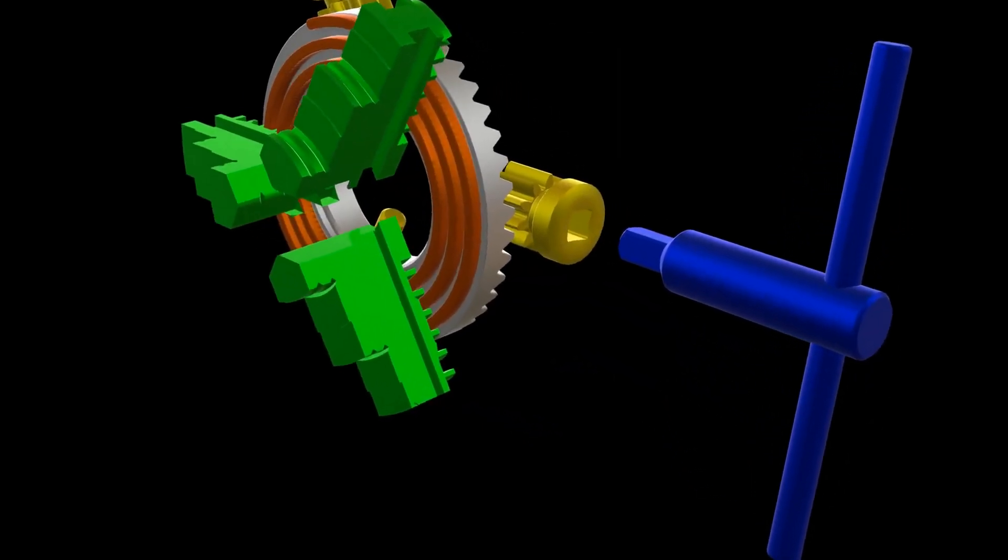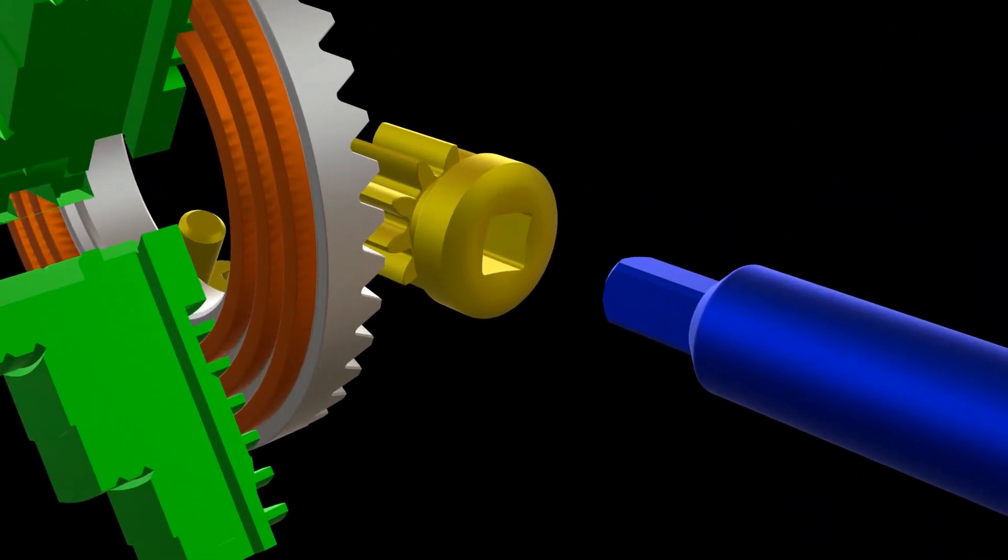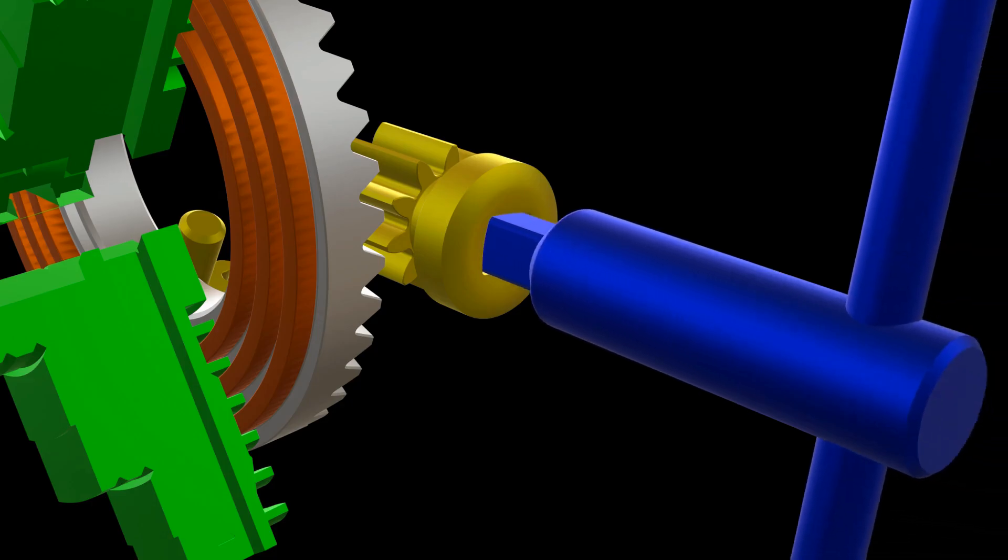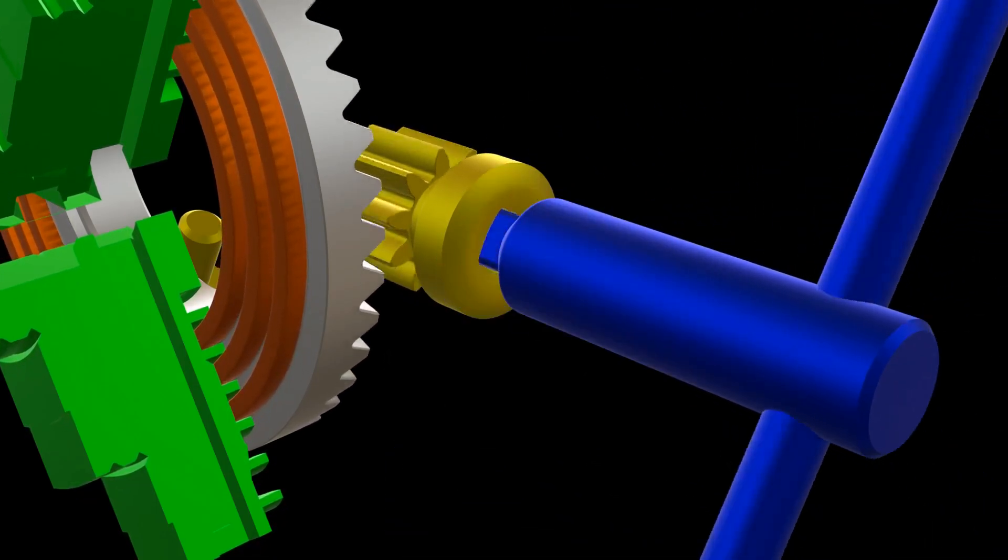The tool has a square end that enters any of the pre-made square grooves. When you rotate the tool, the groove inside rotates.